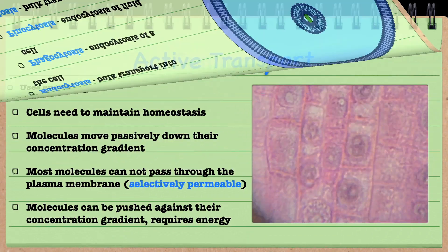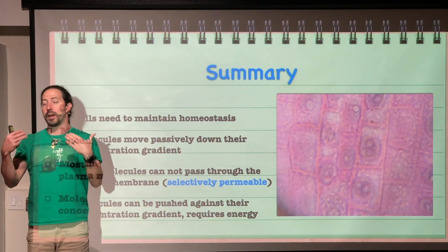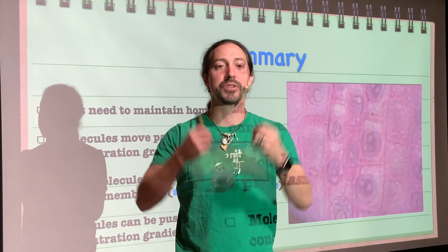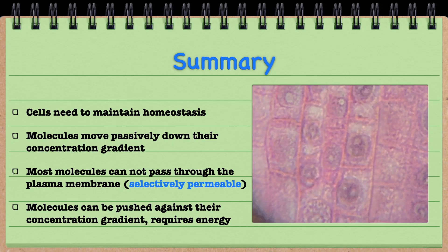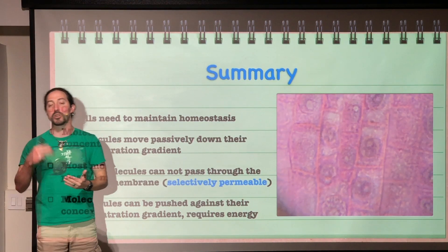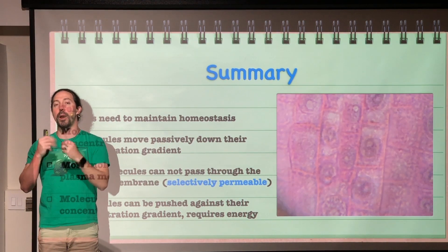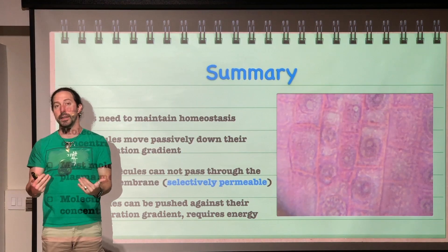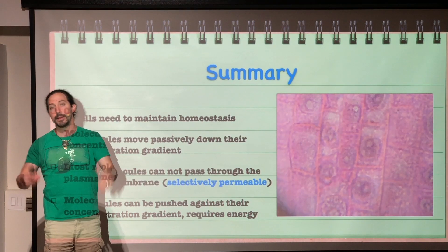For exocytosis, the process happens in reverse — molecules are removed from the cell, typically waste or signaling molecules sent to another cell. In summary, cells must maintain homeostasis as a characteristic of life. A key challenge is diffusion — molecules spreading down their concentration gradient. Cells manage this with a selectively permeable membrane, protein channels, active transport, and bulk transport. All of that is how a cell maintains homeostasis.